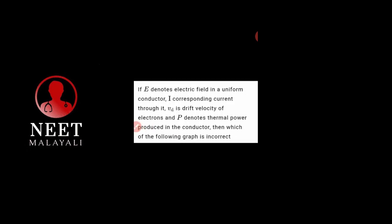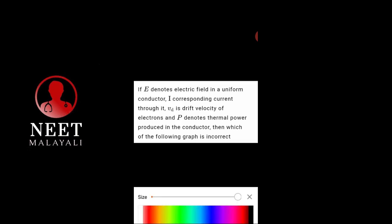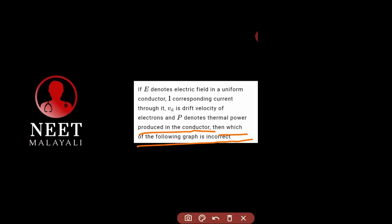If E denotes electric field in a uniform conductor, I the corresponding current through it, vd the drift velocity of electrons, and P the thermal power produced in the conductor — then which of the graphs is incorrect? We consider E, I, and vd.